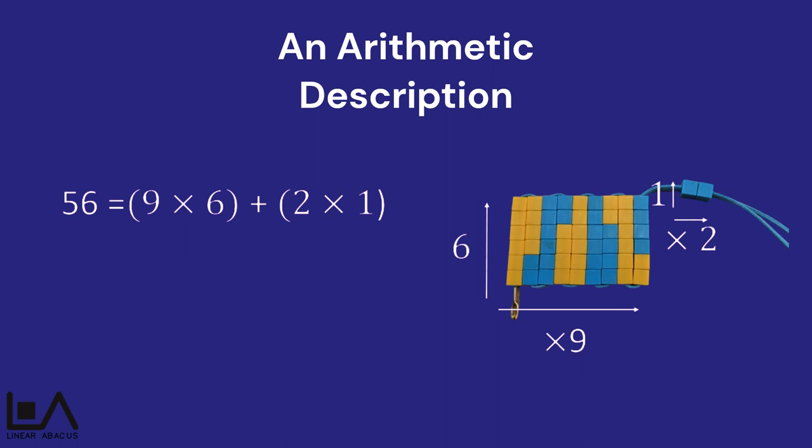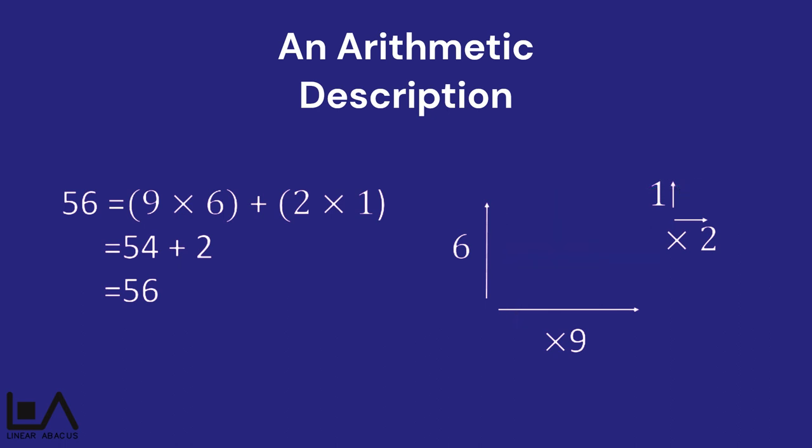Using the coloured rows on this string, we can see that 9 times 6 is 54 and 2 more makes 56.